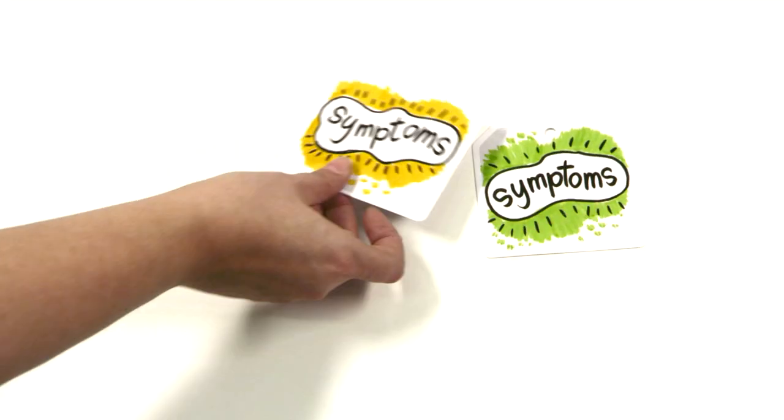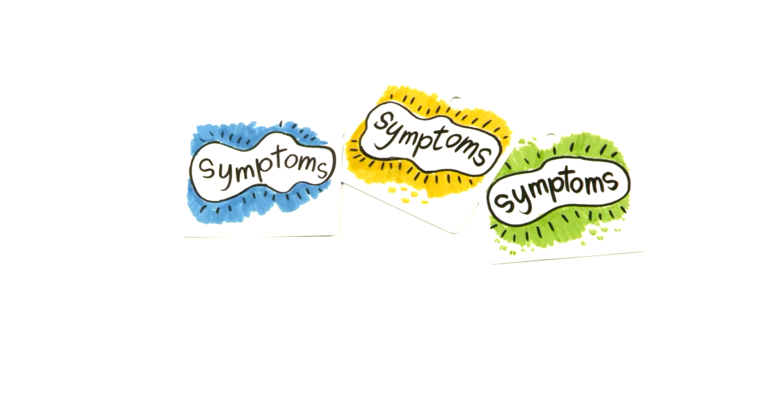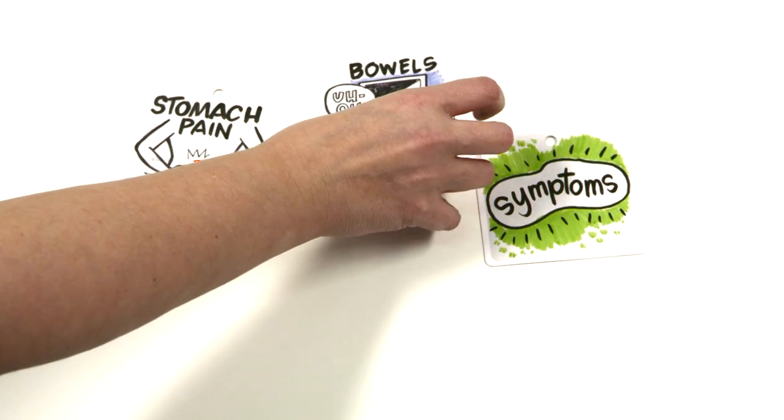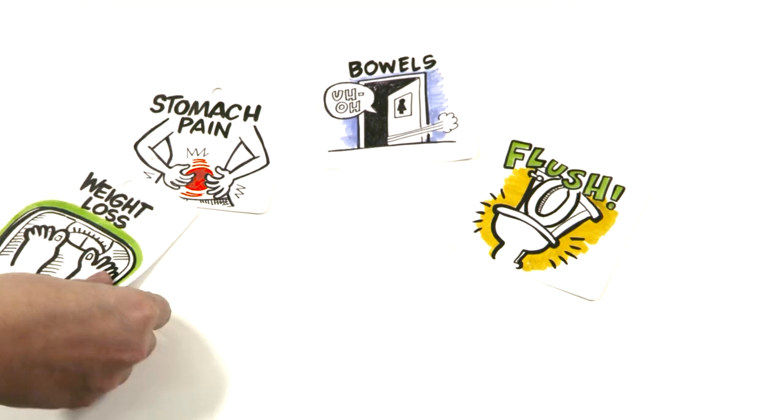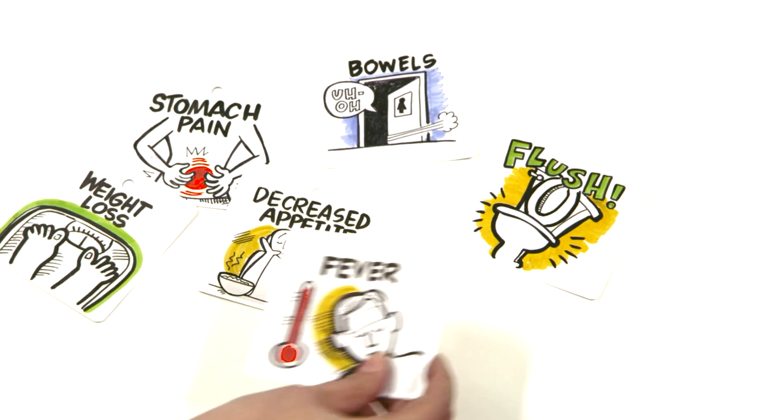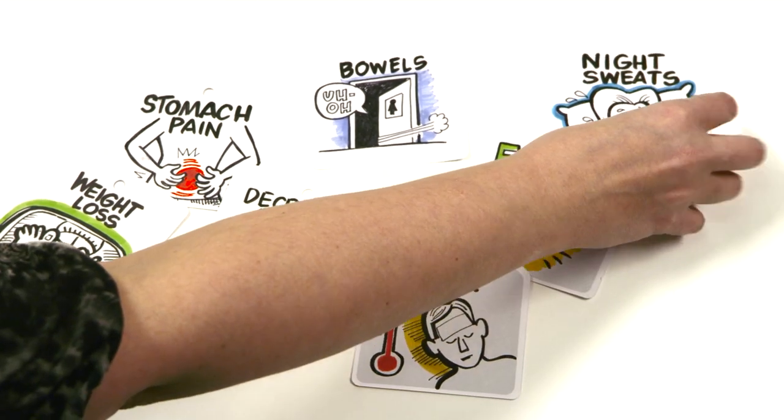The major symptoms of UC and Crohn's do however overlap. These include stomach pain and a change in bowel habits. Almost always this means more urgent movements. Other symptoms include weight loss, decreased appetite, fever, night sweats and extreme tiredness.